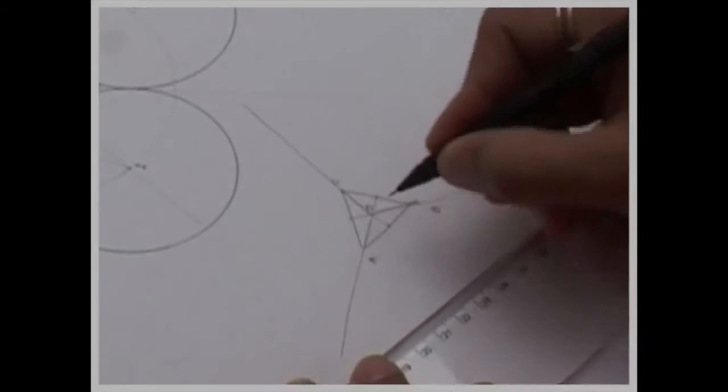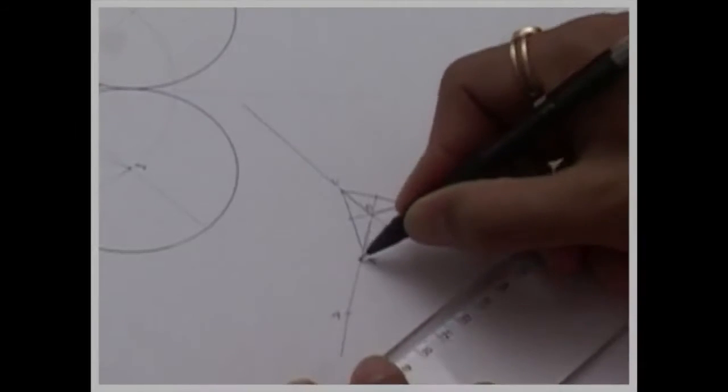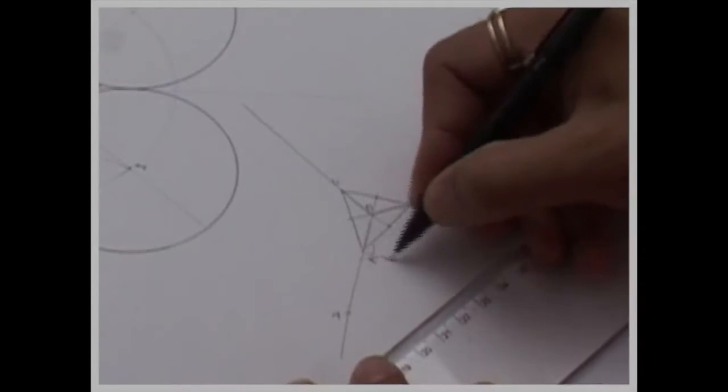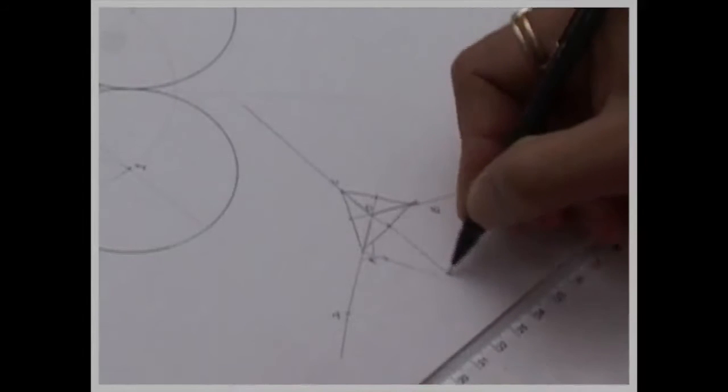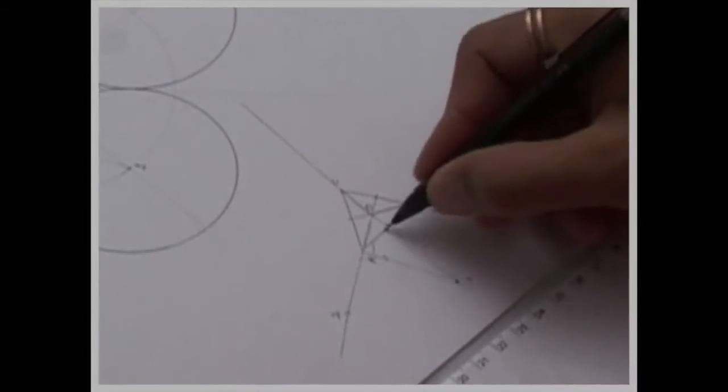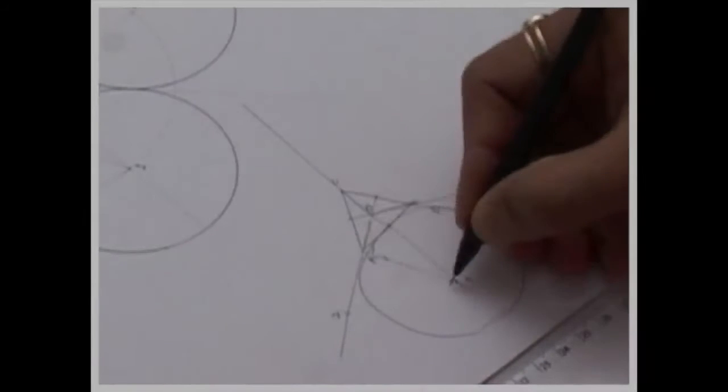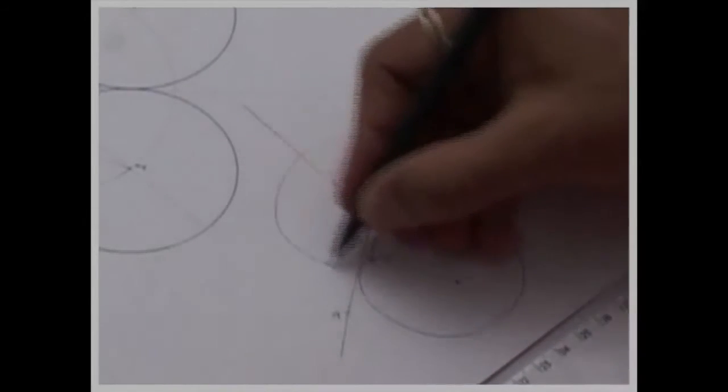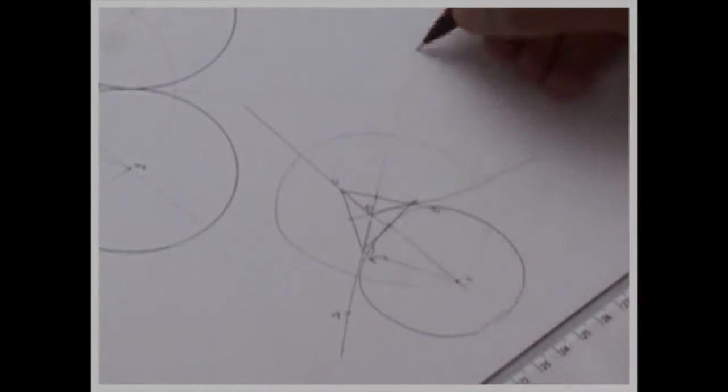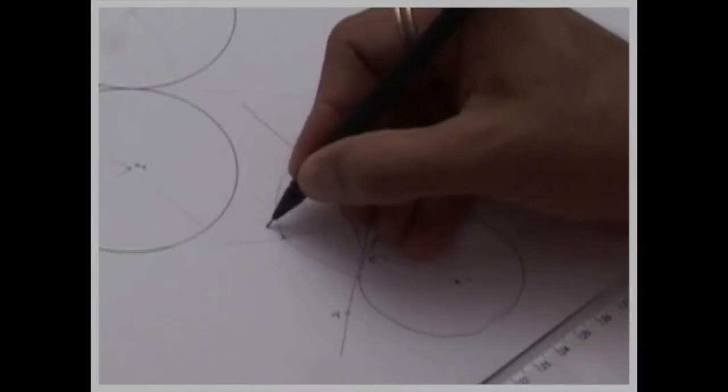Bisect angle. Now instead of bisecting OAB, now we bisect angle BAE, D. Wherever it will intersect, from that point again we will draw one circle. Same method, we will take O to 1, we will extend this line, we will extend this line. Wherever it will cut, that is 2 and 3.